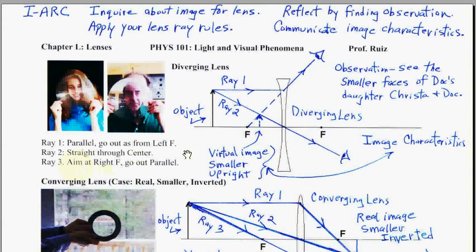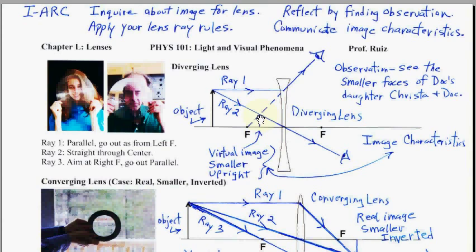Ray 3, which we didn't use, would be ray 1 backwards. Ray 1 backwards is to aim at F on the other side and then go out parallel. If I did that from the top, I would aim at the F on the other side down here, go out parallel, and it would again appear to come from the same point, if I have an eyeball out to the right.